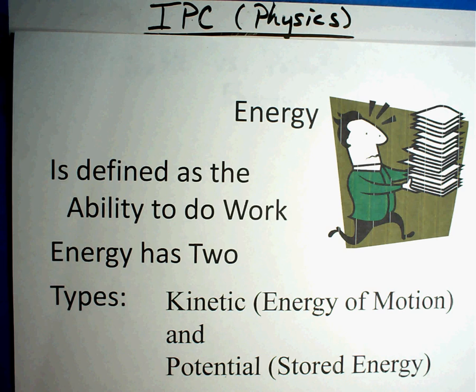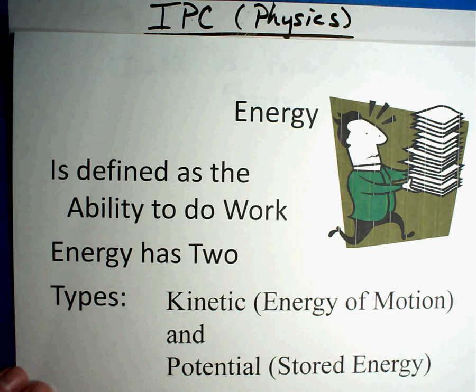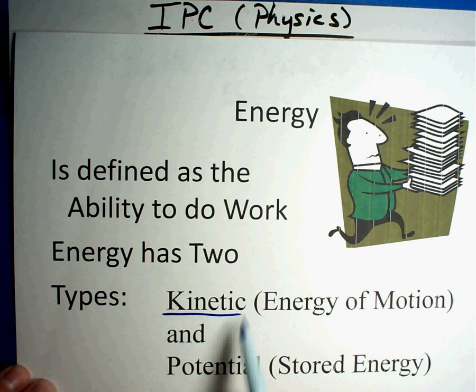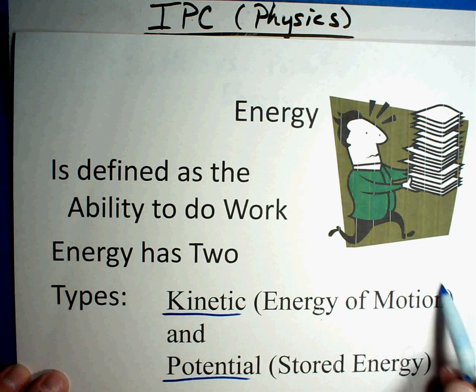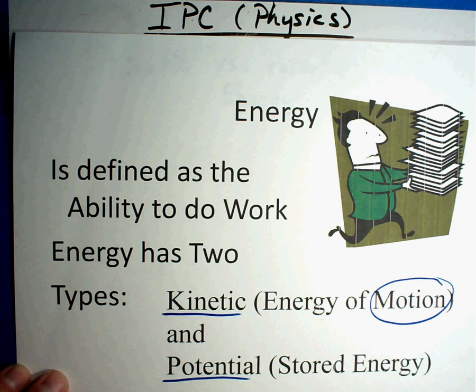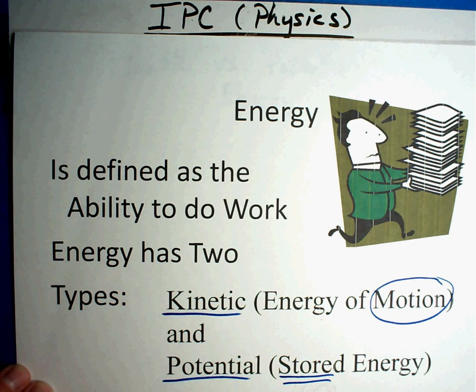All right, first thing: energy is defined as the ability to do work. There are two kinds of energy, and we just said that there's kinetic and potential energy. Here's what you need to think about when you hear these words. Kinetic energy is all about motion. Anything that is moving has kinetic energy. So as you're sitting there writing with your pencil on your piece of paper, that's kinetic energy. Potential energy is what is stored. It's sitting there, ready to be used. Let's take an example.